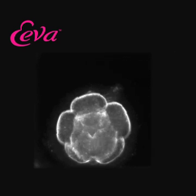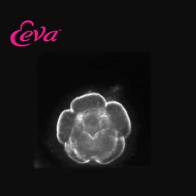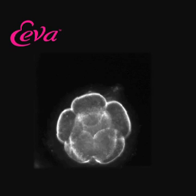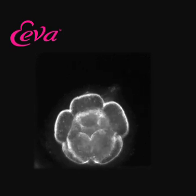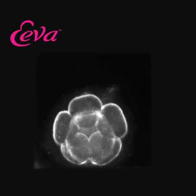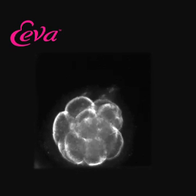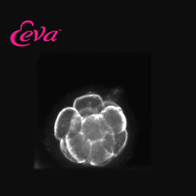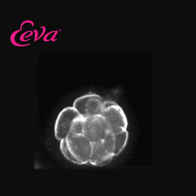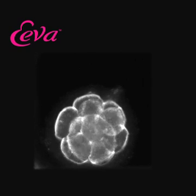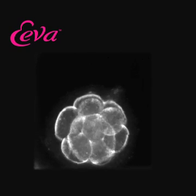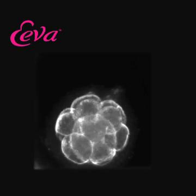Soon, you will note that the embryo reaches the stage of development called Morula, typically on day four. At this stage, the embryos have about 16 to 32 cells that begin to tightly pack into a solid mass.